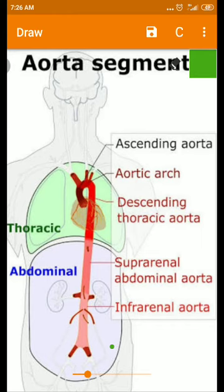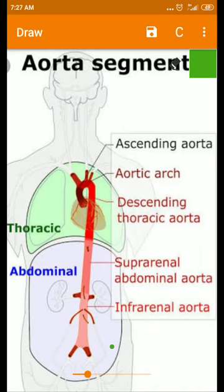Normally in each intercostal space there is one pair of posterior intercostal arteries — one on the right side and one on the left side. Anteriorly, there are two intercostal arteries on each side of the intercostal space.